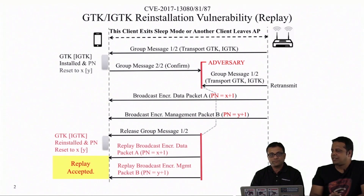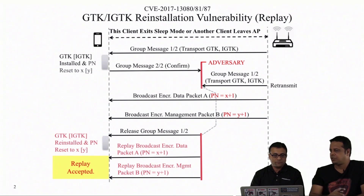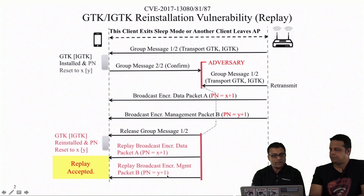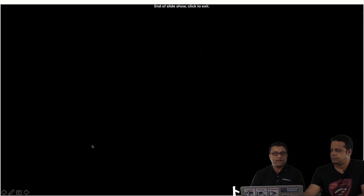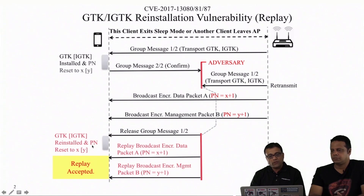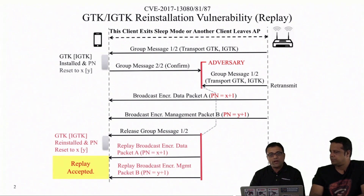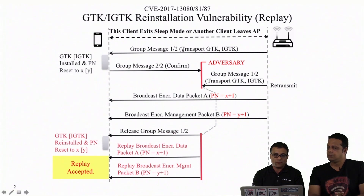Looking at mitigation possibilities, the vulnerability is primarily on the client side — it reinstalls an already-installed key when it shouldn't, even upon receiving these retransmitted messages. So it does need to be fixed on the client side. However, it's very difficult to fix clients on a large scale in enterprise settings. Some mitigation on the access point side is also possible.